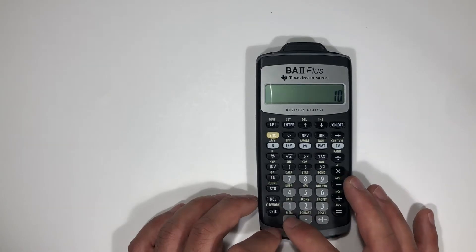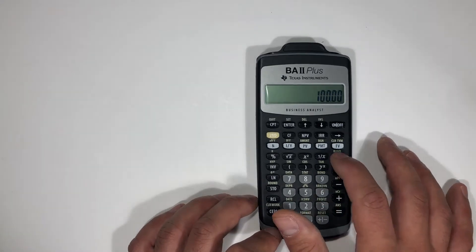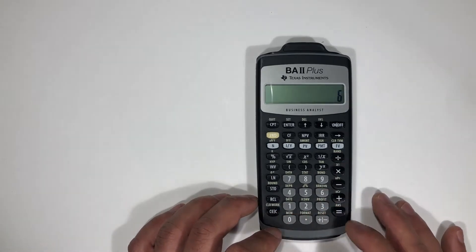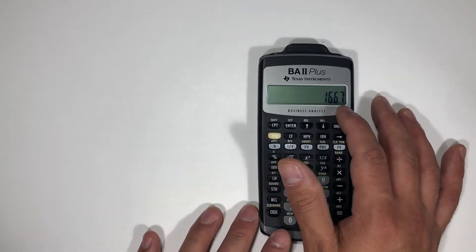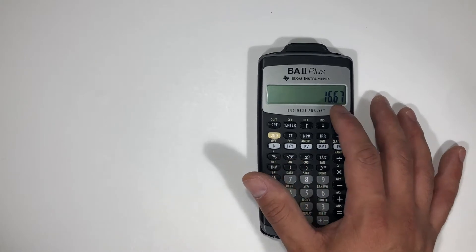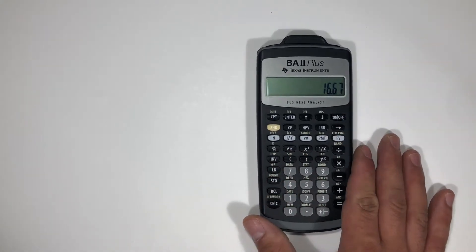So now we will divide 100 by 6 and now it shows 16.67. Now the reason why this makes a difference is when you're taking an exam, especially a financial exam...